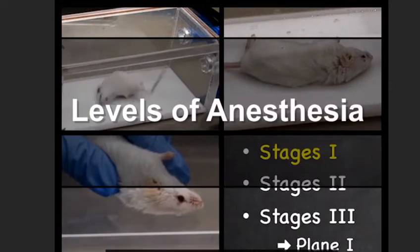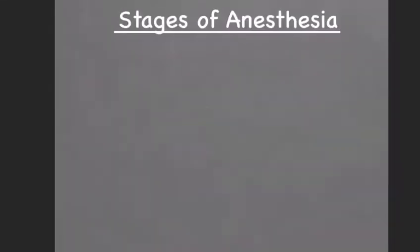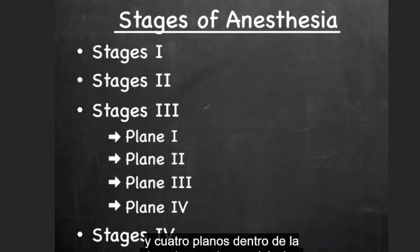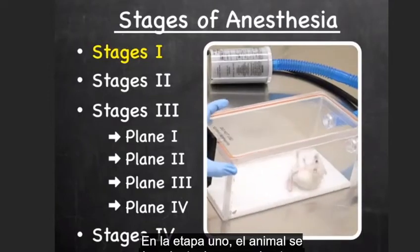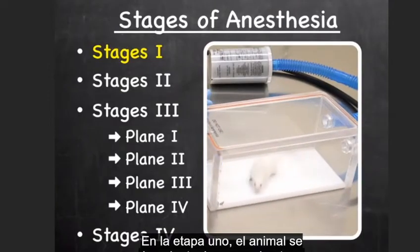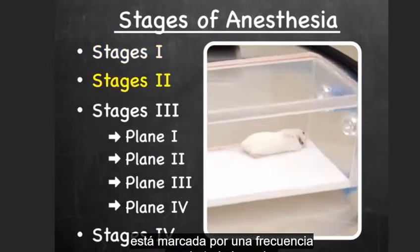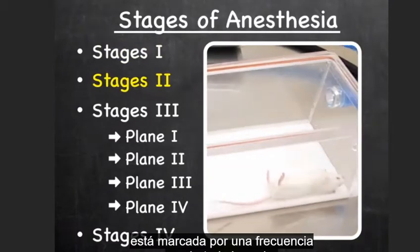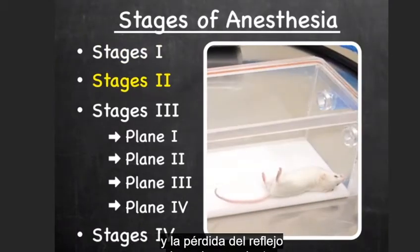Let's start by discussing the levels. There are four stages of anesthesia and four planes within stage three, or the surgical stage. During stage one, the animal becomes disoriented. Stage two is marked by an irregular respiratory rate and loss of the righting reflex.